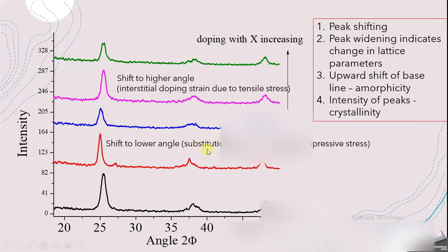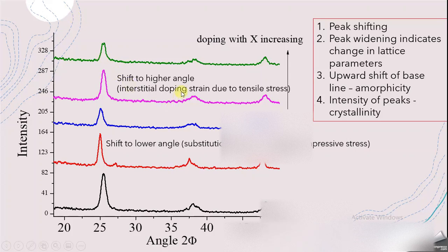This shift towards the left is because of substitutional doping, which causes compressive stress. As you move upward and increase the concentration of the dopant X, the peak starts shifting back towards a higher angle, moving toward the pure titanium oxide peak position on the right side. This indicates that at higher dopant concentrations, interstitial doping is occurring instead of substitutional doping, and a larger dopant ion also causes the peak to shift to higher angles.